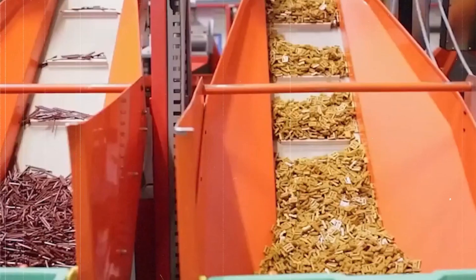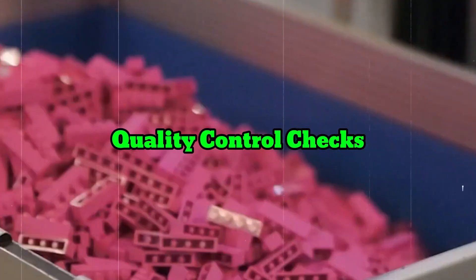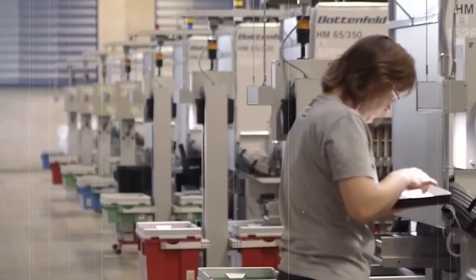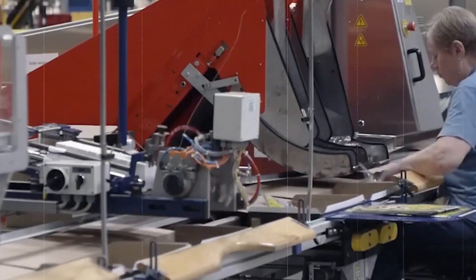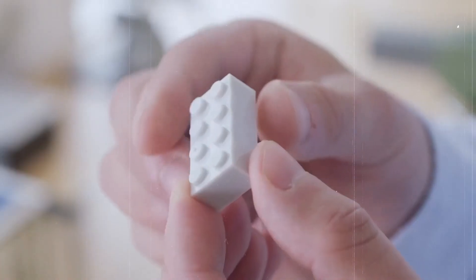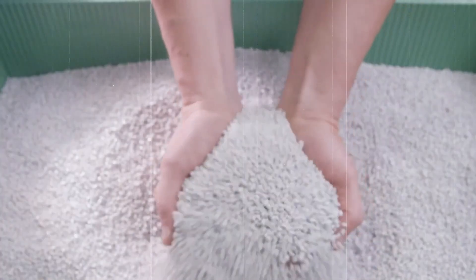After the bricks are molded, they go through a series of quality control checks. Each brick is inspected for defects such as color inconsistencies, warping, or incorrect dimensions. Automated cameras and sensors check the bricks for any deviations from the norm, while human inspectors perform additional checks.